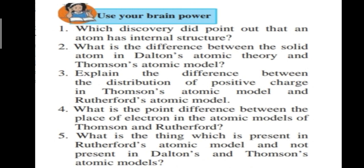Now let's use our brain power on a few questions from the textbook related to this topic. First question: which discovery pointed out that an atom has an internal structure? The discovery of electrons by J.J. Thomson pointed out that an atom has an internal structure, because while Dalton only said an atom is an indivisible hard spherical ball, Thomson proved that something is present inside.